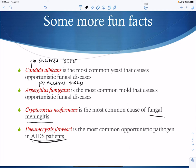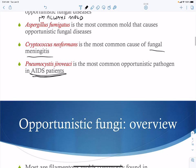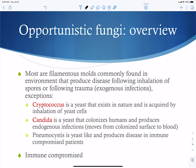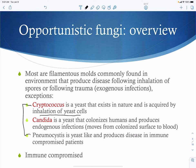Pneumocystis jirovecii is the most common opportunistic pathogen in AIDS patients, highly associated with AIDS progression and can contribute to patient death. Molds commonly found in the environment cause disease in immune-compromised individuals and can also be introduced through trauma. Three organisms — Cryptococcus, Candida, and Pneumocystis jirovecii — are all yeast-like: Cryptococcus is a yeast in nature and you inhale yeast cells; candida is a yeast that colonizes humans, making it an endogenous infection; and Pneumocystis is yeast-like, mostly causing disease in the immune-compromised.